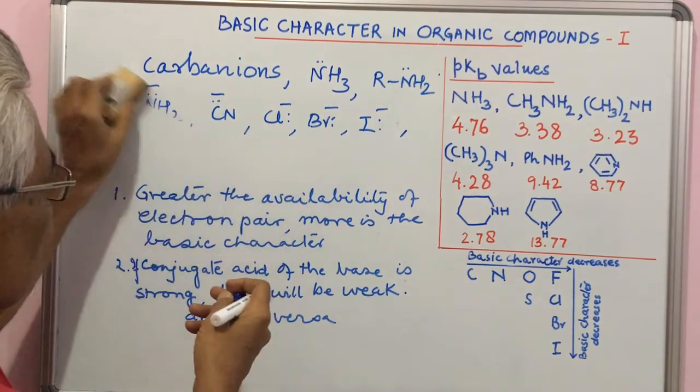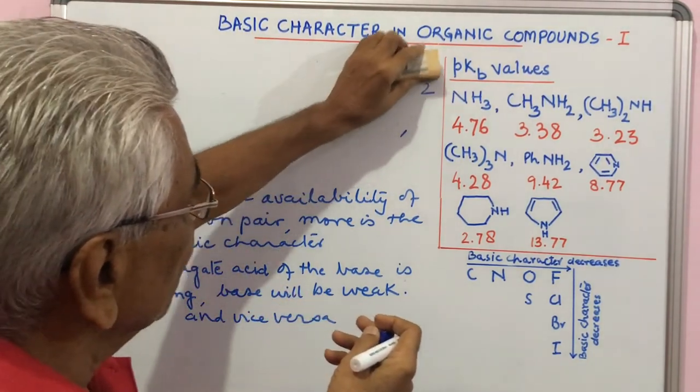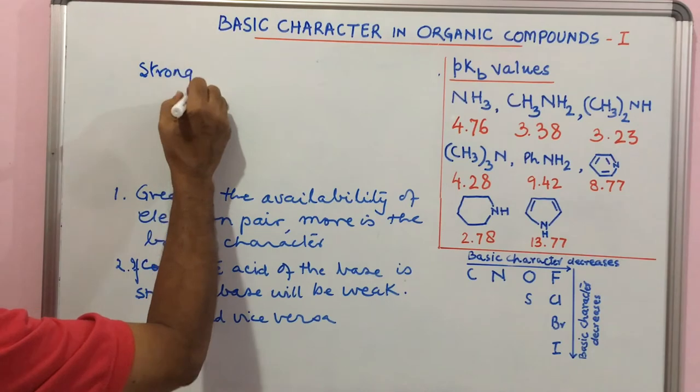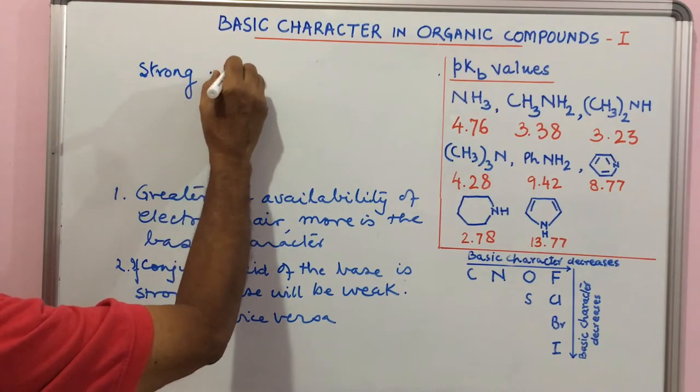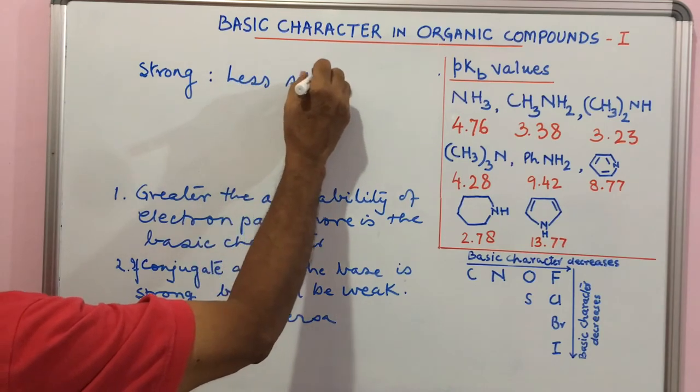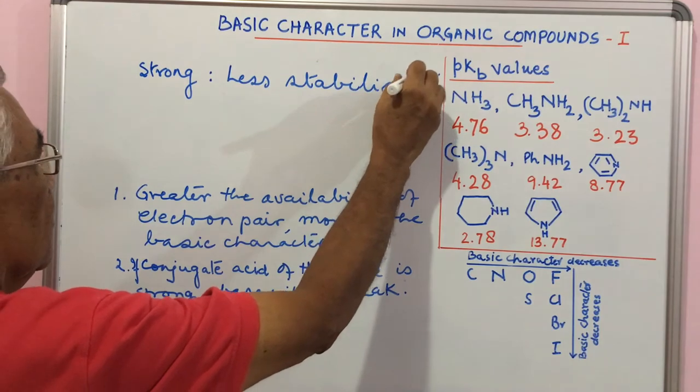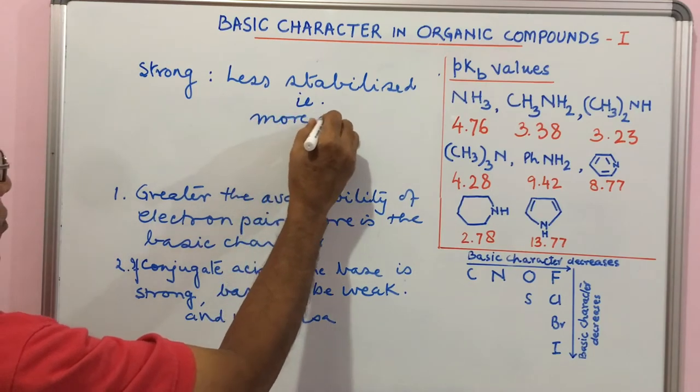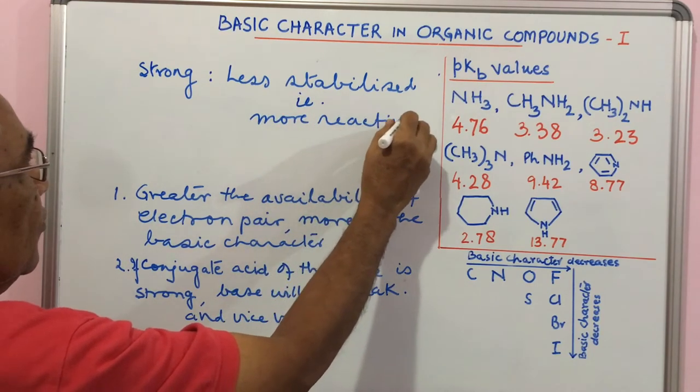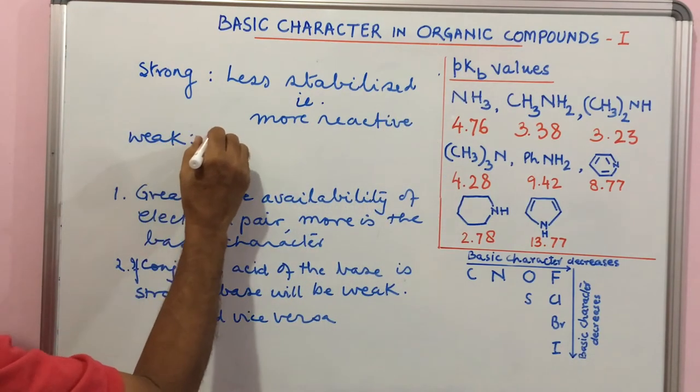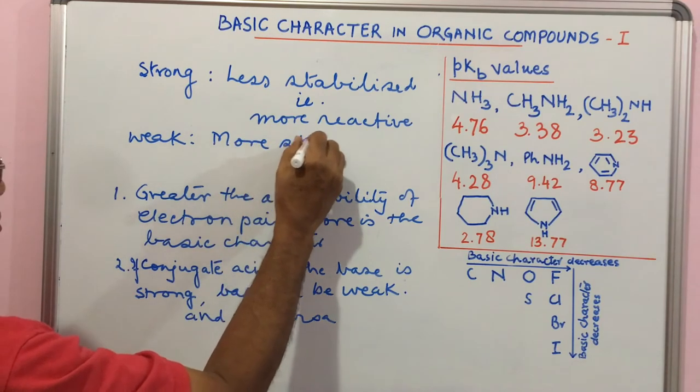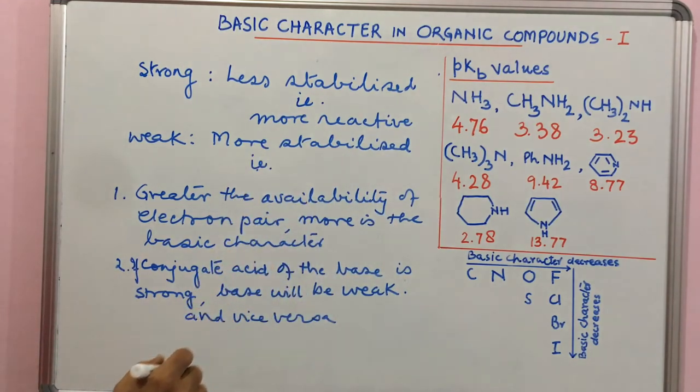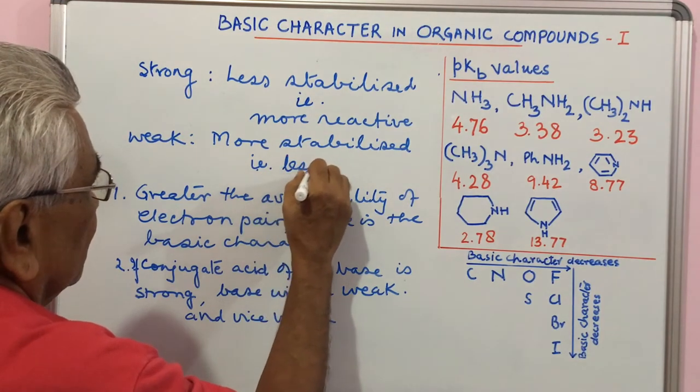What is this weak and strong? You can understand it by seeing the stability. Strong conjugate base means less stabilized by resonance or otherwise. If it is less stabilized, it means more reactive and hence it will be called strong. Weak means more stabilized, less reactive. We will keep this in mind while ascertaining basicity.